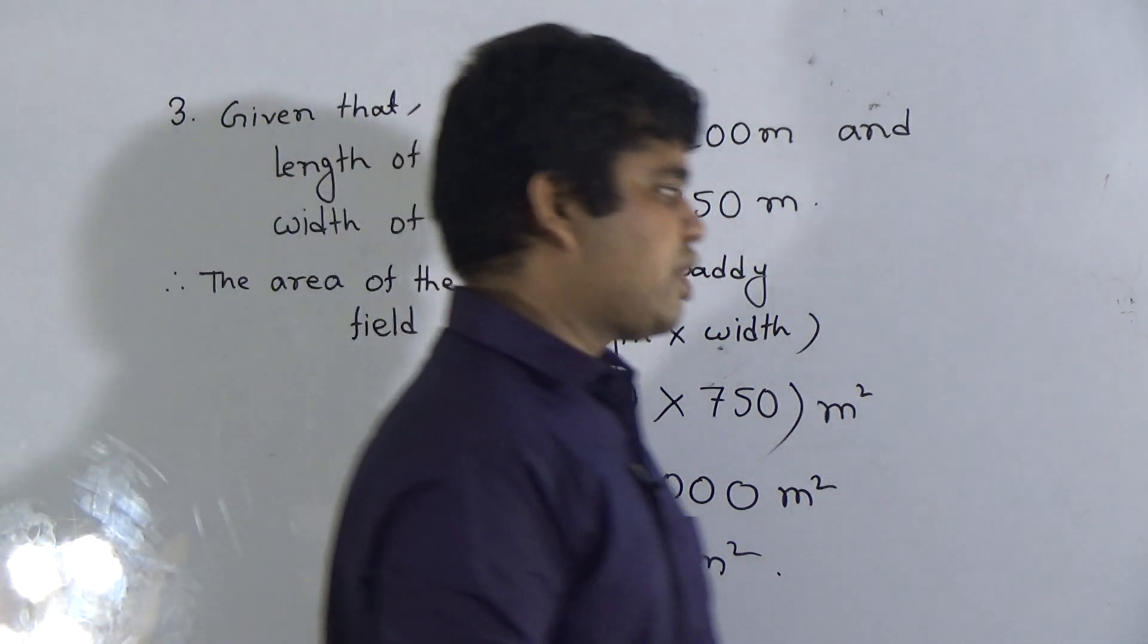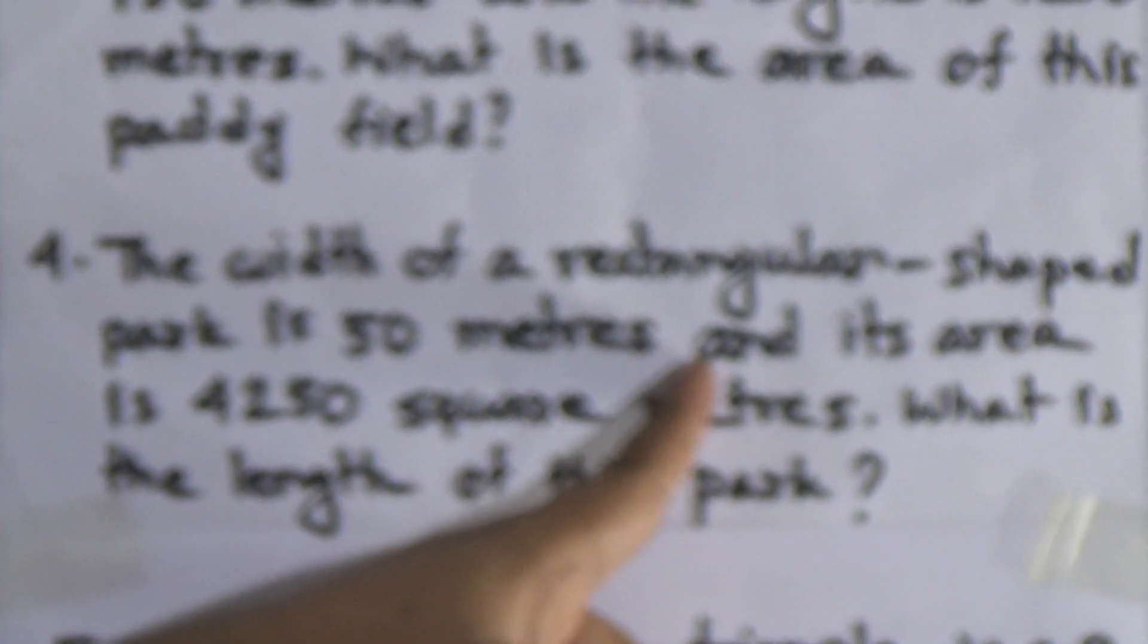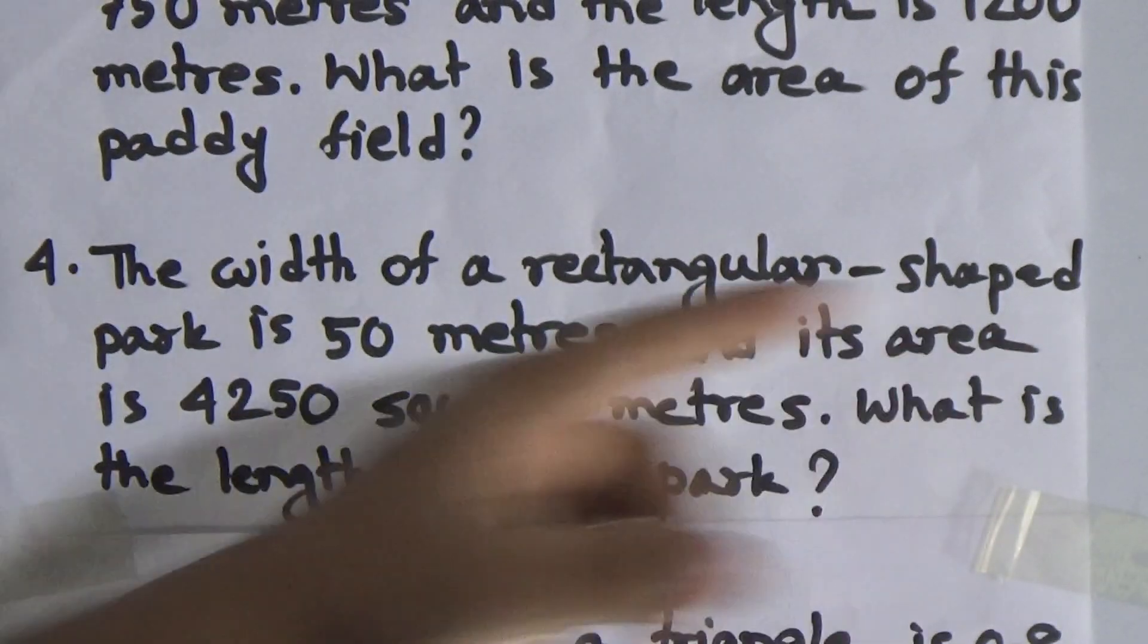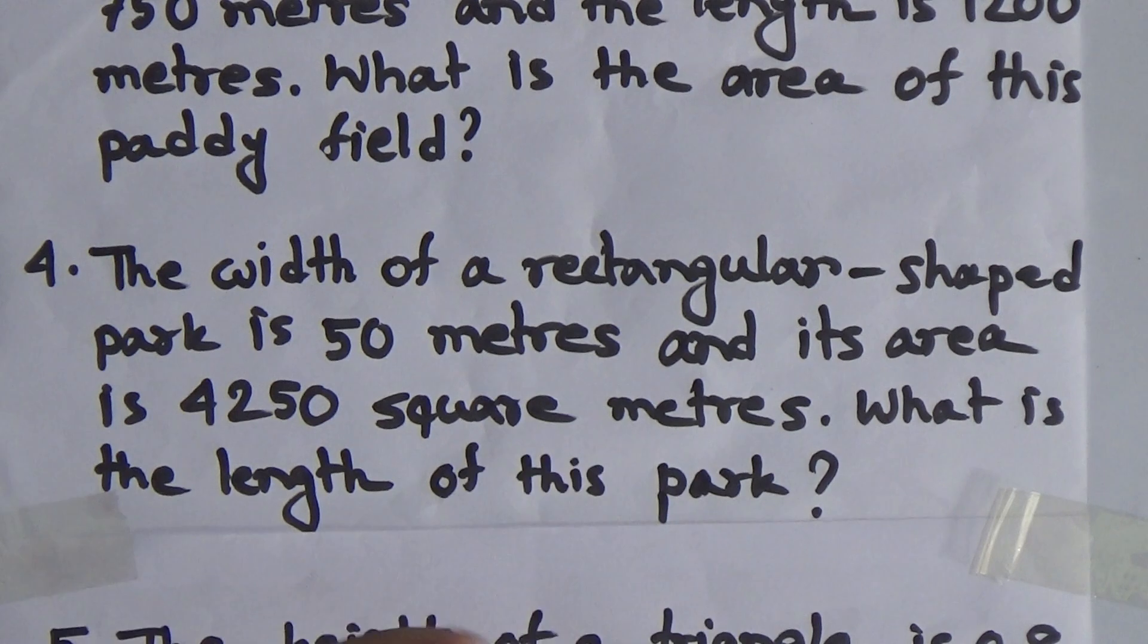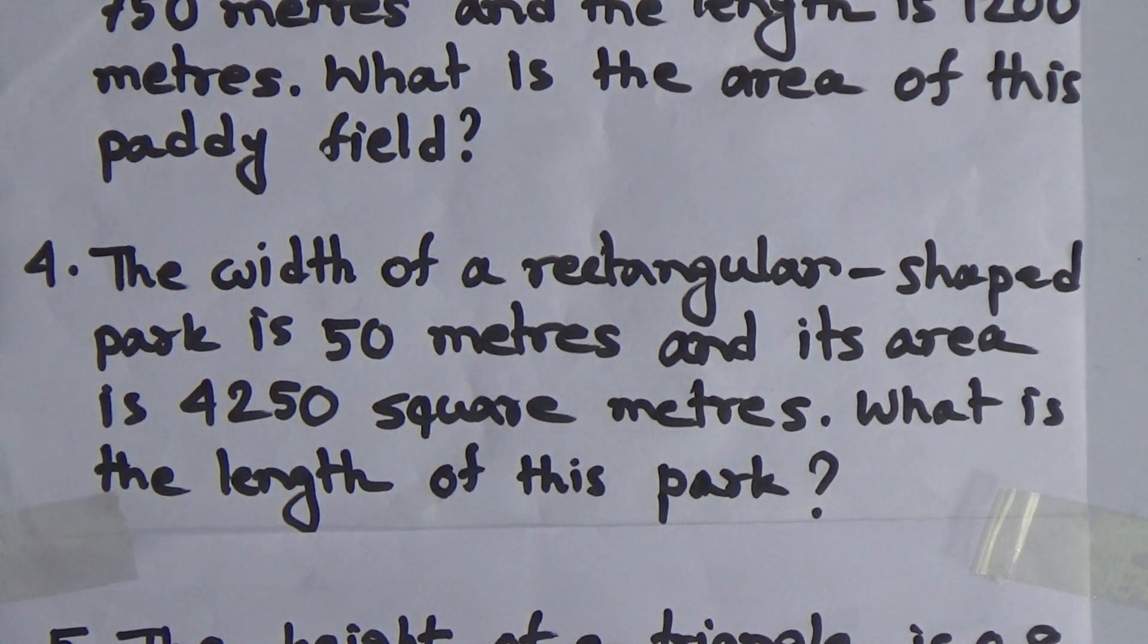This is the solution of question number 3. Next, we shall solve question number 4. The width of a rectangular-shaped park is 50 meters and its area is 4,250 square meters. What is the length of this park? So, here width and area is given. We need to find out the length of the park. The park is in rectangular shape. So, if we divide this area by the width, then we get the length of the park.